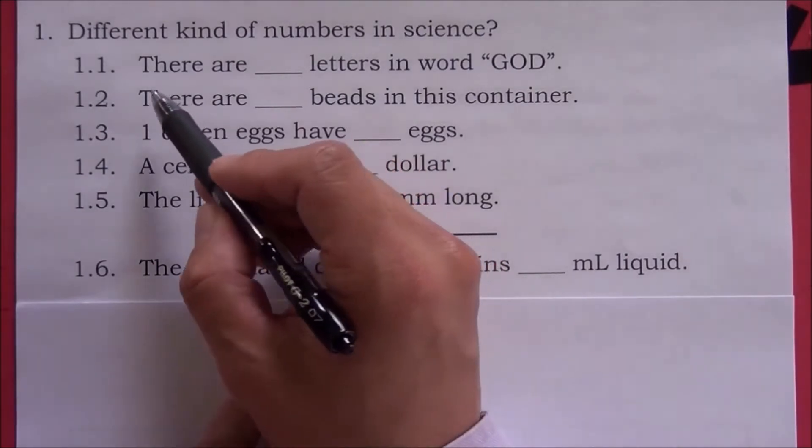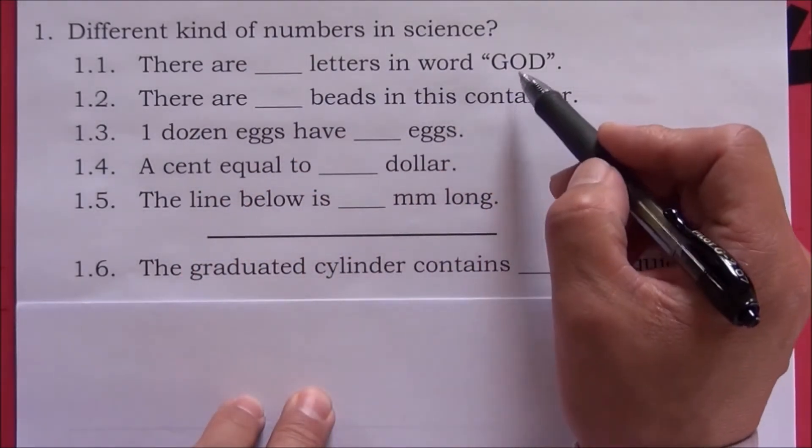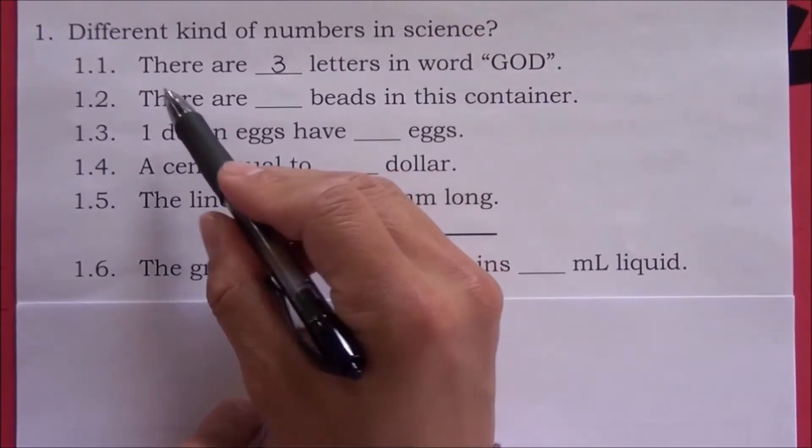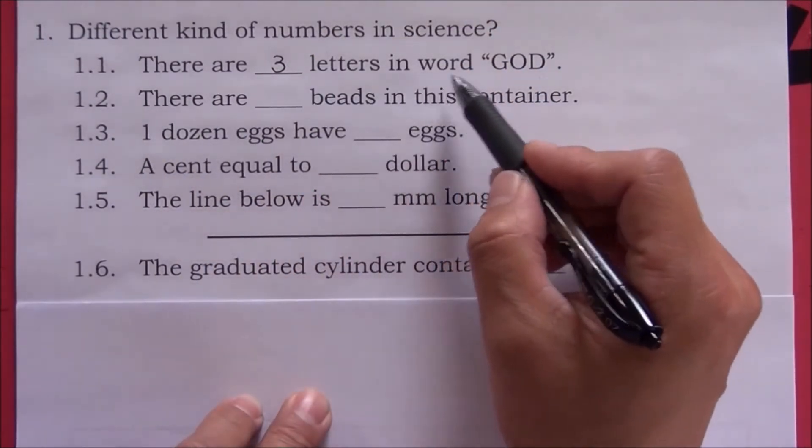The first example: There are how many letters in the word God? One, two, three. There are three letters in the word God.